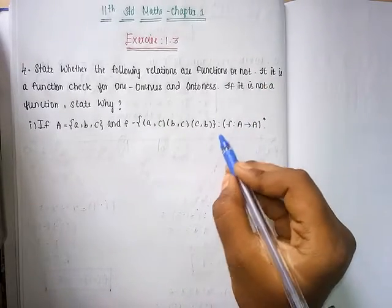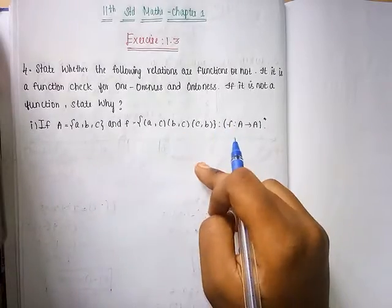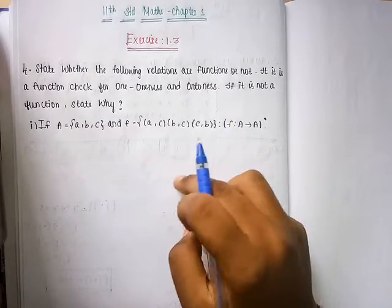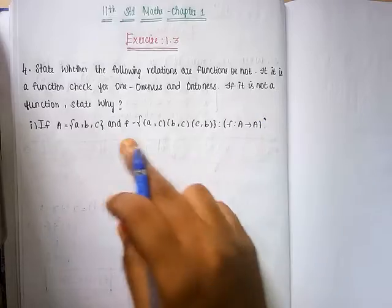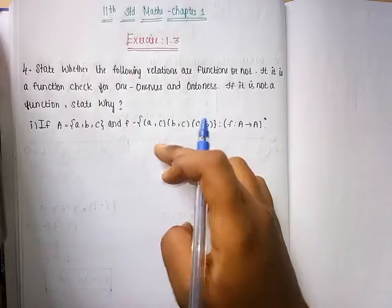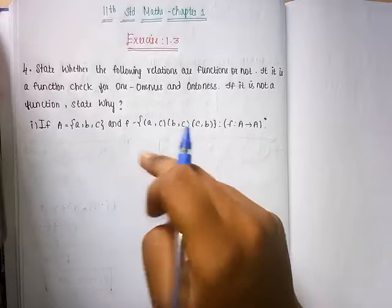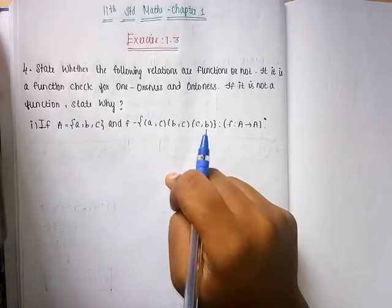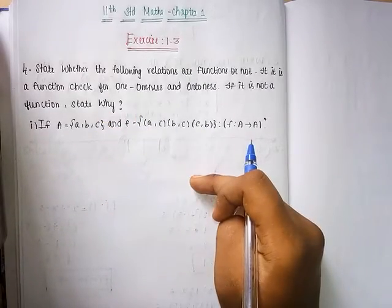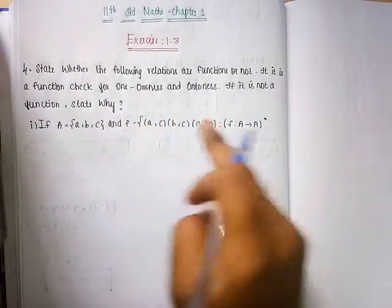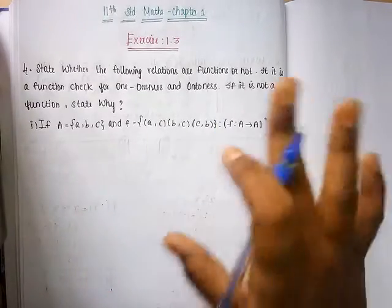That means this is A cross A — a relation from A to A. If it is A cross A, then it could be a function. So the domain is {a, b, c} and co-domain is also {a, b, c}. The mappings are: a maps to c, b maps to c, and c maps to b.